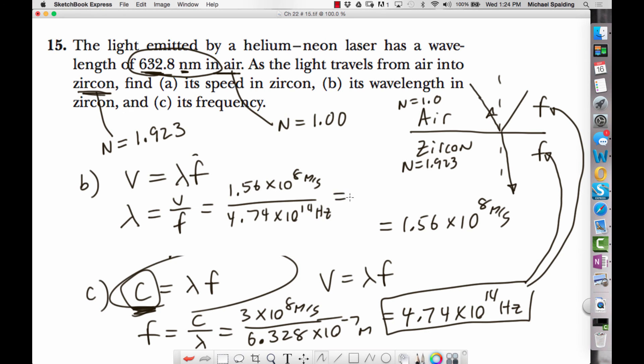And then this gives us a wavelength of 3.29 times 10 to the negative 7 meters, which is the same thing as 329 nanometers. So that's the answer to part B.